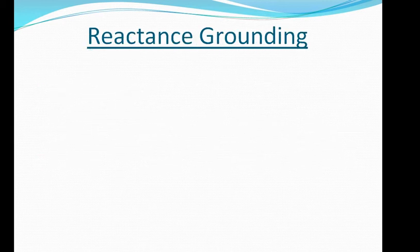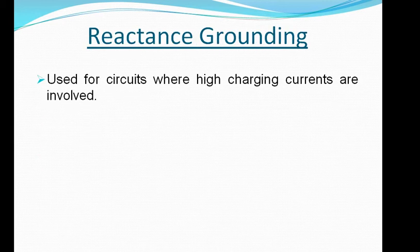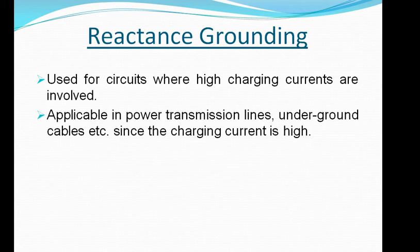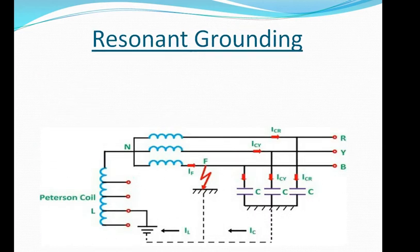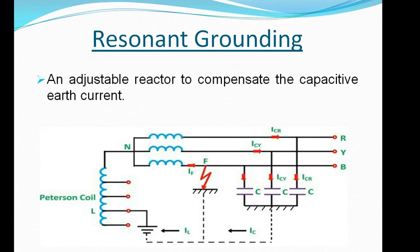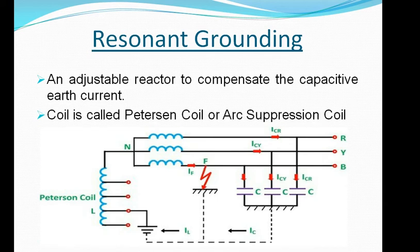Number three is reactance grounding, used for circuits where high charging currents are involved, such as power transmission lines, underground cables, etc. This type of grounding provides additional reactance which neutralizes the capacitive currents. Number four is resonant grounding, which uses an adjustable reactor to compensate the capacitive earth current. This coil is called the Peterson coil or arc suppression coil. We can control the earth current flowing to earth by varying this coil.